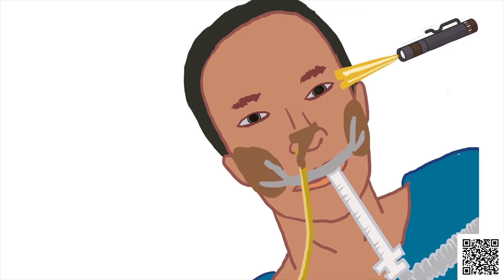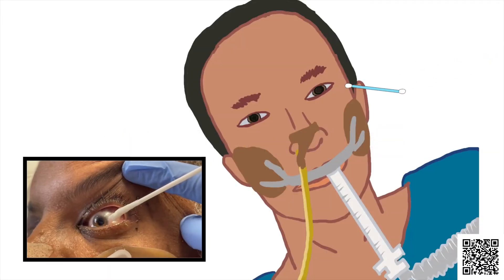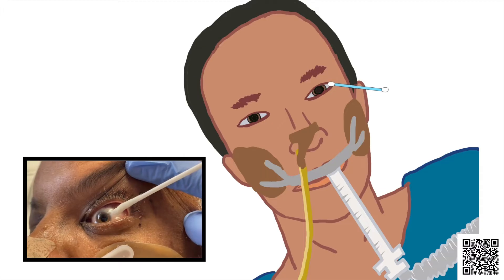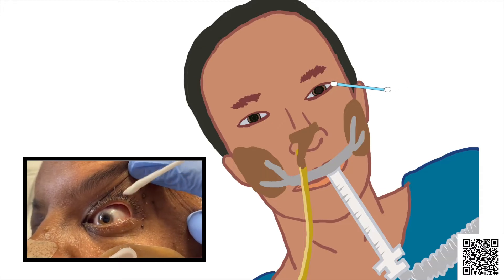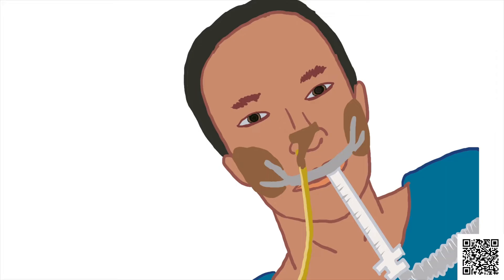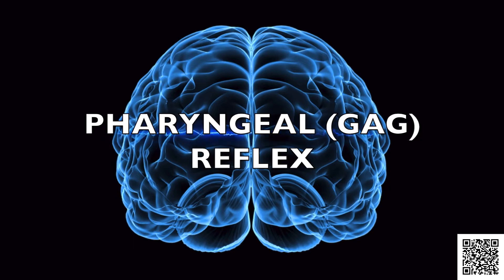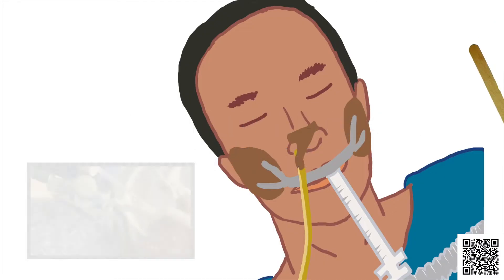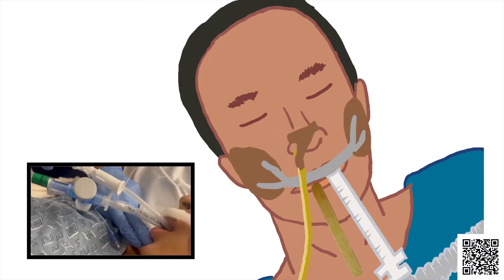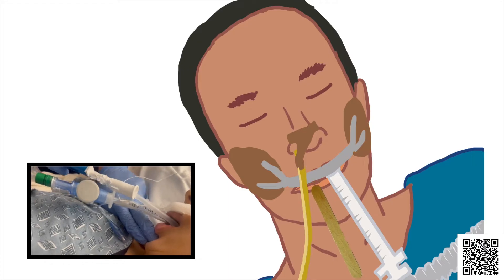Corneal reflex: using a cotton swab, gently touch each patient's cornea and observe for any reactions — blinking or eyelid movements. If no such response, this is consistent with absent corneal reflex. Pharyngeal gag reflex: the provider will elicit a gag reflex by inserting a suction tube or Yankauer into the patient's mouth. An absence of gag is an indication of an absent gag reflex.